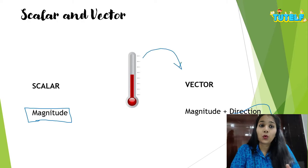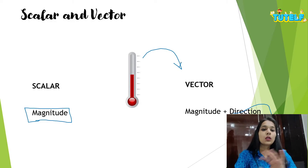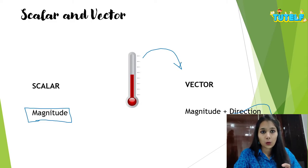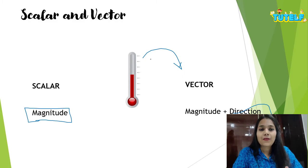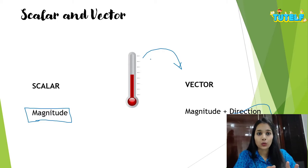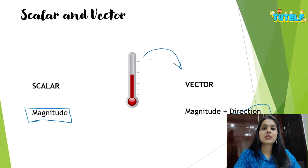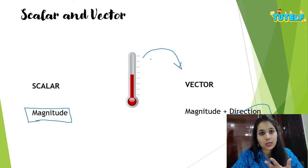Distance is the total path that is covered. When given as 20 kilometers, that is a scalar quantity. But if I say that a car moves 20 kilometers south, it has both a magnitude and a direction associated with it, so it becomes a vector quantity.